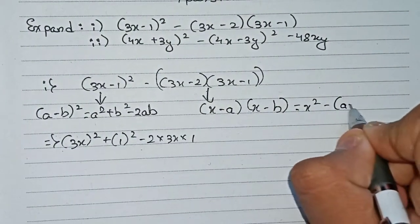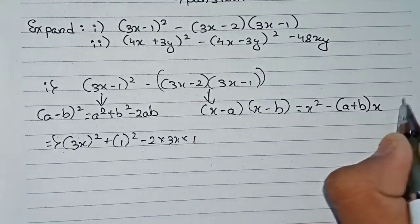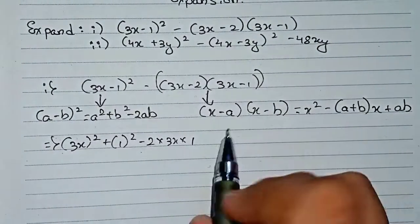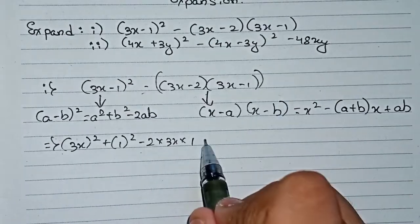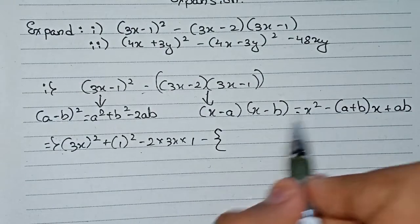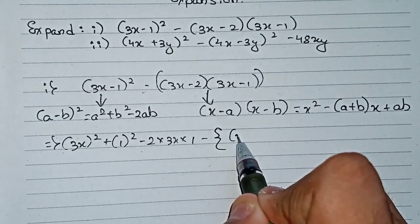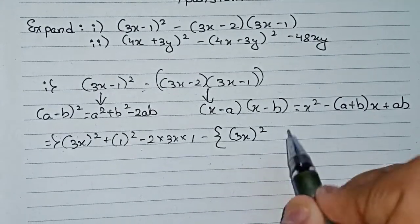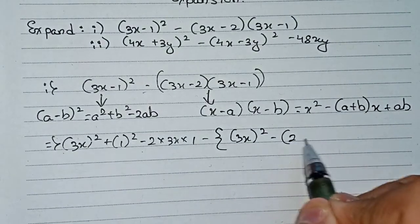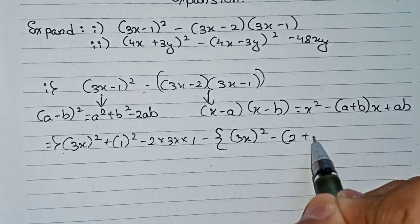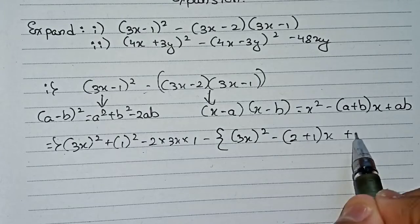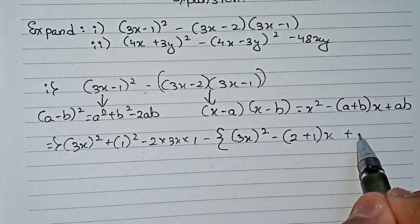For the second portion, the form will be x² minus (a+b)x plus ab. According to this formula we put down the values: first x² — that means (3x)² — then minus (a+b), so that will be 2 plus 1, multiplied by x, plus 2 into 1.